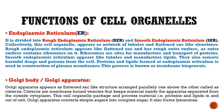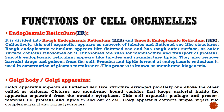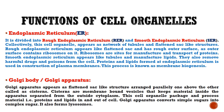The last cell organelle we will study is the Golgi body or Golgi apparatus. It appears as flattened sac-like structures arranged parallelly one above the other, called cisterns. Cisterns are membrane-bound vesicles that keep material inside the apparatus separated from the outside cytoplasm. This organelle packages and processes material — proteins and lipids — in and out of the cell. The Golgi apparatus also converts simple sugars into complex sugars and helps in the formation of lysosomes. That's all for today, thank you.